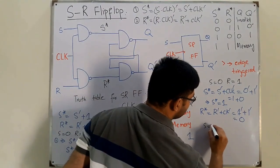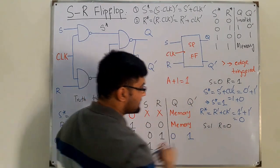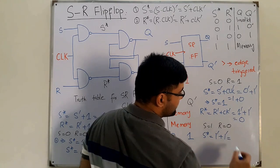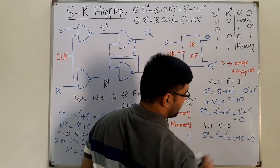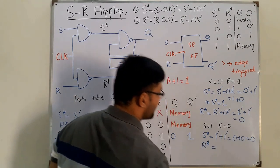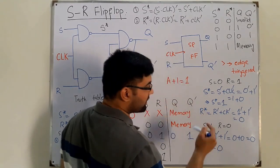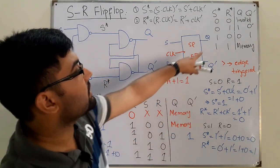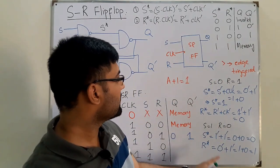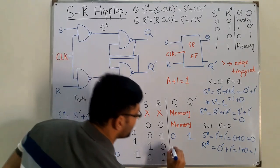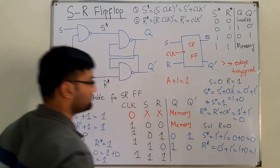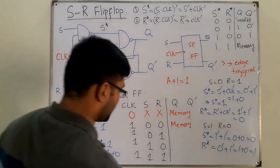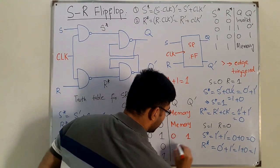When the clock is 1 and S=1, R=0: S* = S̄ OR CLK̄ = 0 OR 0 = 0. For R*: R* = R̄ OR CLK̄ = 1 OR 0 = 1. So S*=0 and R*=1, which gives Q=1 and Q̄=0.